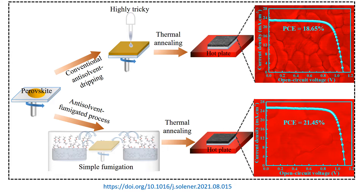Here is the schematic illustration of the method. In conventional anti-solvent dripping, we drop the anti-solvent onto the perovskite precursor. After heating to the required temperature, we obtain the thin film. Using the conventional anti-solvent dripping method after optimization, we got an efficiency of 18.65 percent.